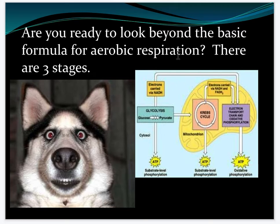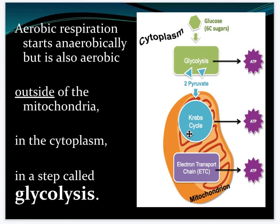There are three stages of cellular respiration. The first is glycolysis, which happens outside of the mitochondria — it's happening in the cytoplasm. Then there's the Krebs cycle, and then there's the electron transport chain. Glycolysis starts anaerobically — without oxygen — but it can be aerobic. It happens in the cytoplasm and glycolysis means 'breaking sugar.' It's the first step in cell respiration and begins to release energy from glucose.